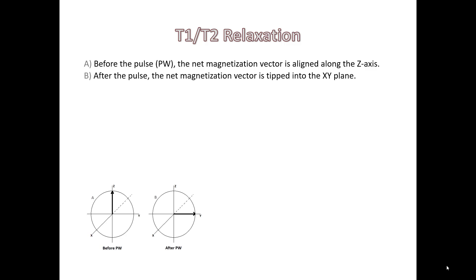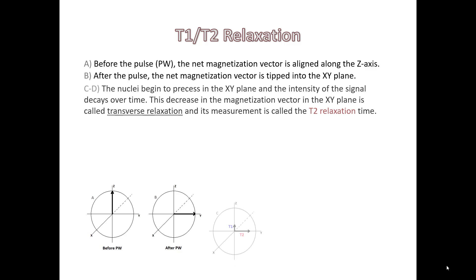After the pulse, the net magnetization vector is tipped into the XY plane. Only magnetization in the XY plane can be observed in an NMR experiment. We can't see net magnetization aligned along any part of the Z axis. The nuclei begin to precess in the XY plane, and the intensity of the signal decays over time.